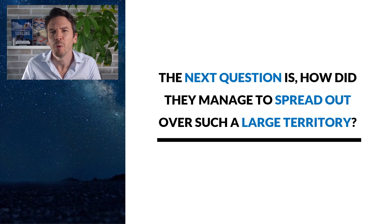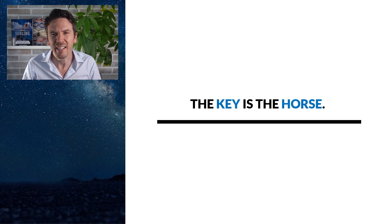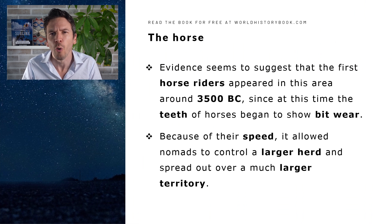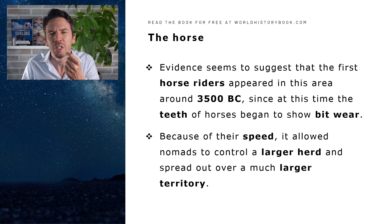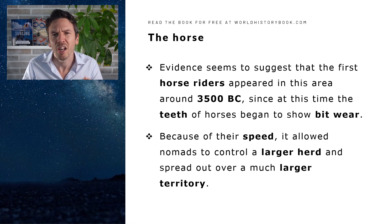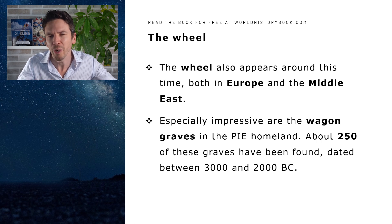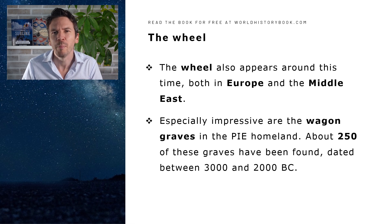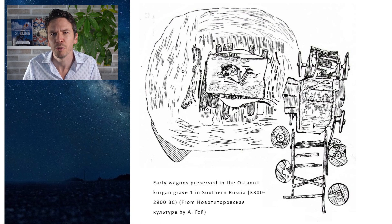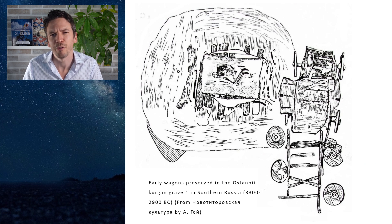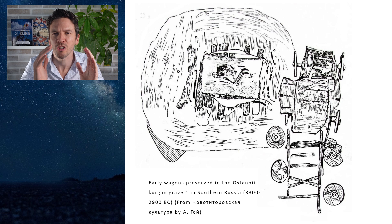The next question is, how did these people manage to spread out over such a large territory? The key here is the horse. Evidence seems to suggest that the first horse riders appeared in this area around 3500 BC, since at this time the teeth of horses begin to show bit wear, which is a sign of domestication. Because of their speed, horses allowed nomads to control larger herds and also to spread out over a much larger territory. The wheel also appeared around this time, both in Europe and the Middle East. Especially impressive here are the wagon graves in the PIE homeland — about 250 of these graves have been found, dated between 3000 and 2000 BC. Here we see a very early example from around 3000 BC, with a buried figure next to a beautifully preserved wagon, and notice that the wheels at this time are solid blocks of wood.